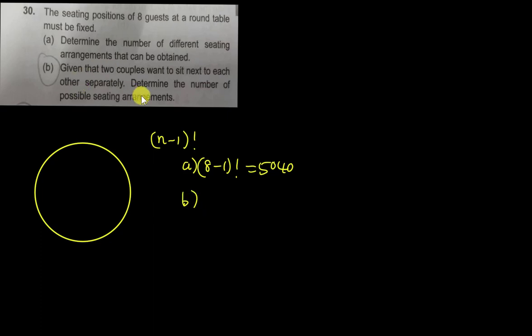The difficult part is about b. They say given that two couples want to sit next to each other separately, so determine the number of possible sitting arrangements. Here we have two different couples. Let's say I will group the couples together. The first couple I'm going to call C1, C2, and then the other couple C3 and C4. And then we have another four more people, let's say one, two, three, four.